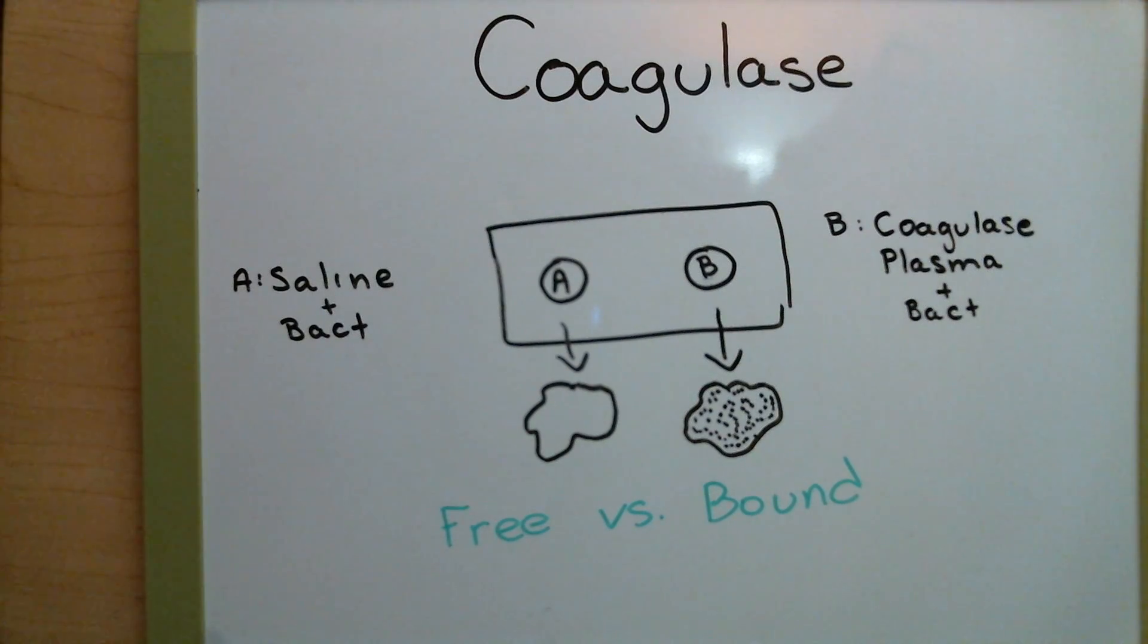Now, what I want to know from you guys is what is the difference between free versus bound coagulase. And as a tip, they both cause agglutination, but the thing that they react with is different. So what is that thing that they each react with that make them different from one another?